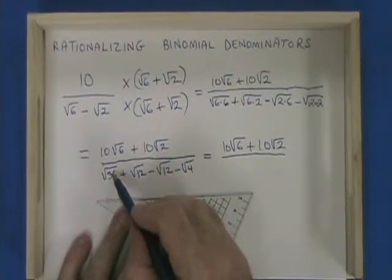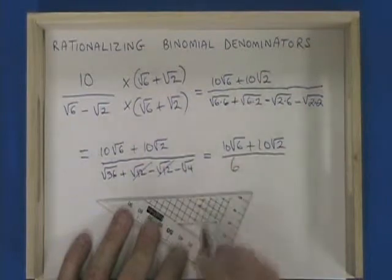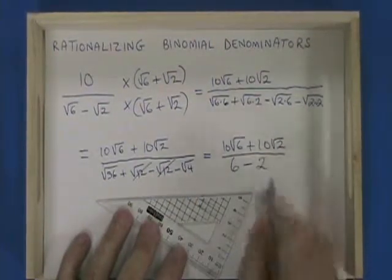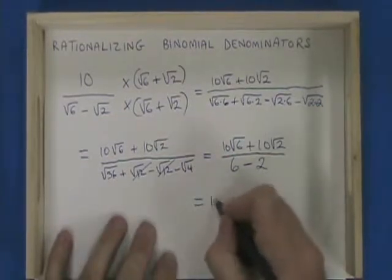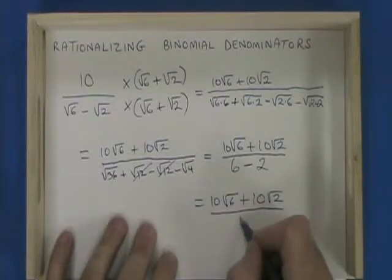The square root of 36 is 6. Root 12 minus root 12 cancels. Now we have minus the square root of 4, which is 2. 6 minus 2, of course, is 4.